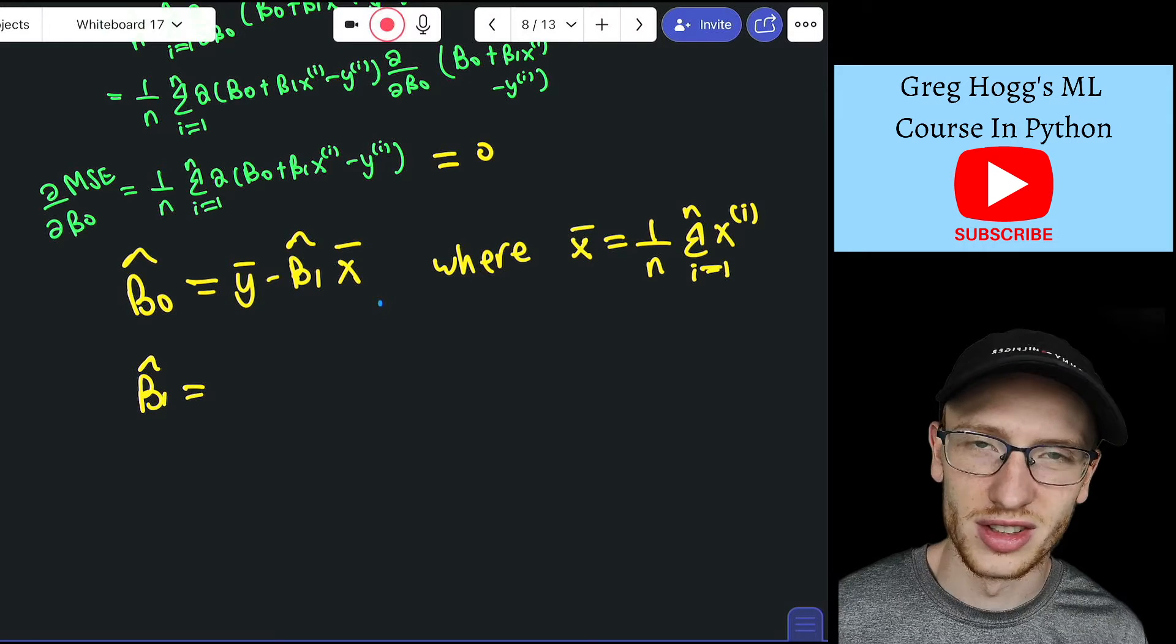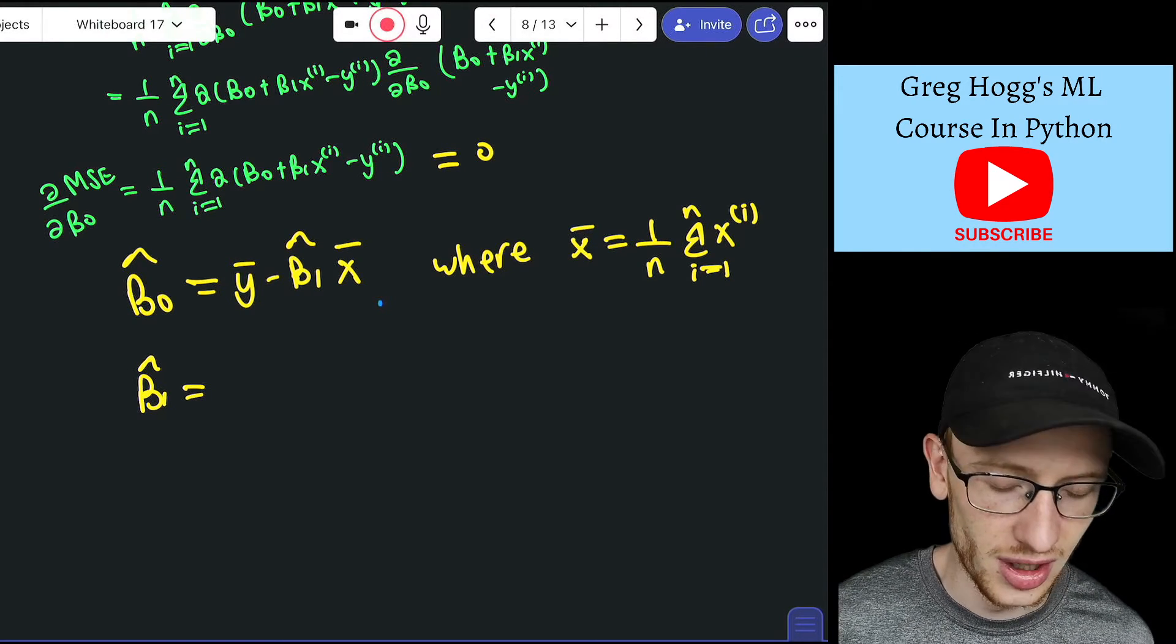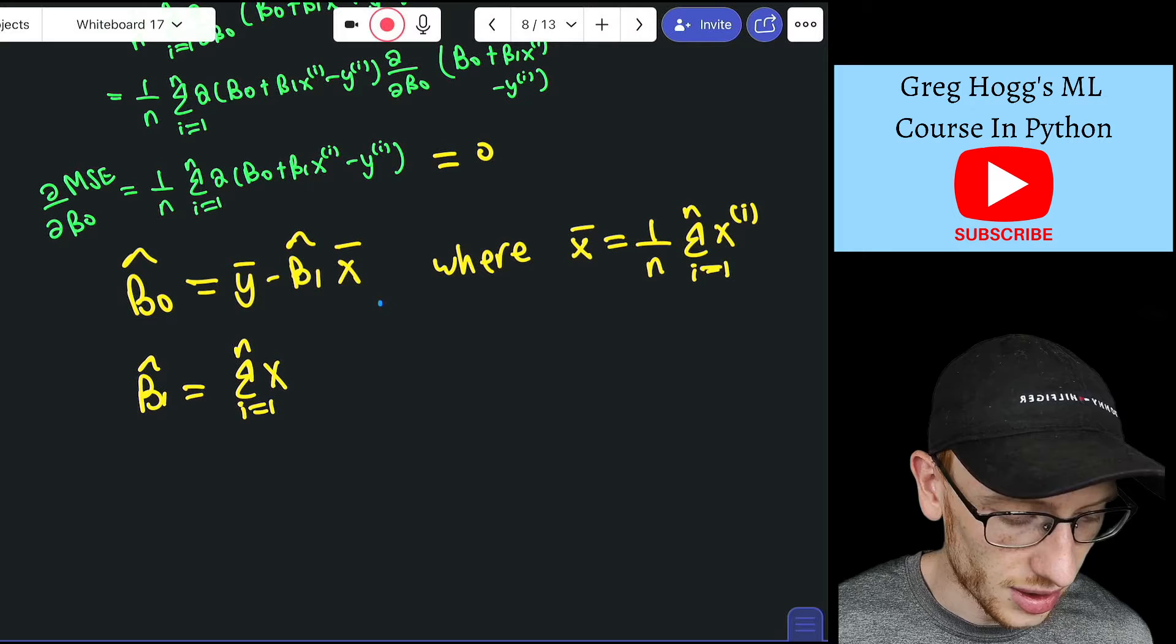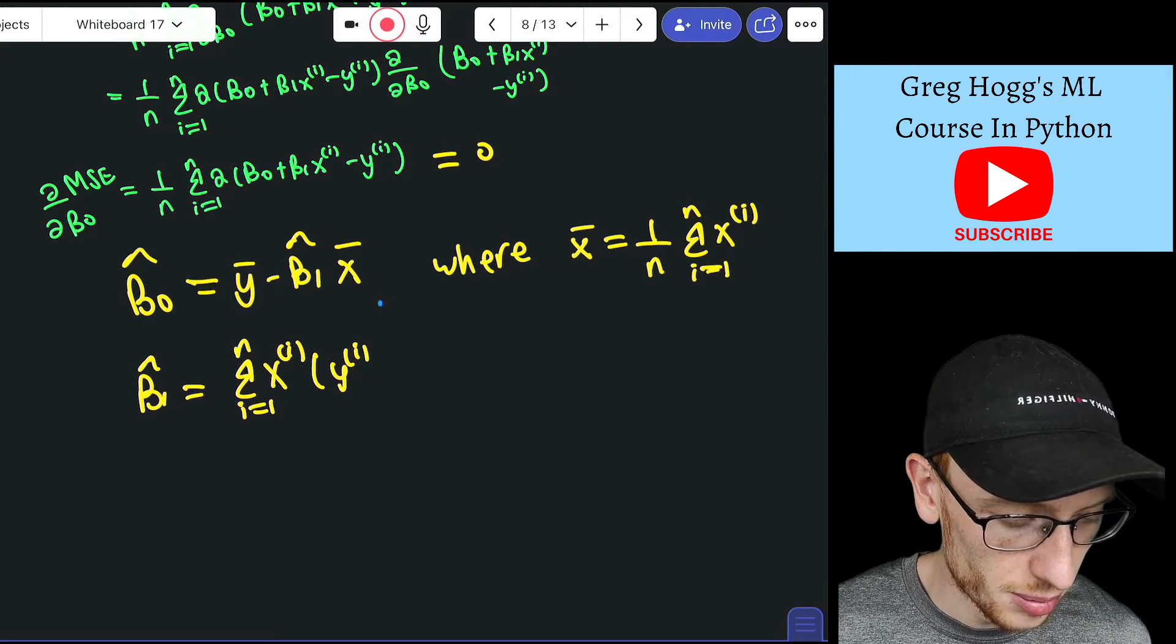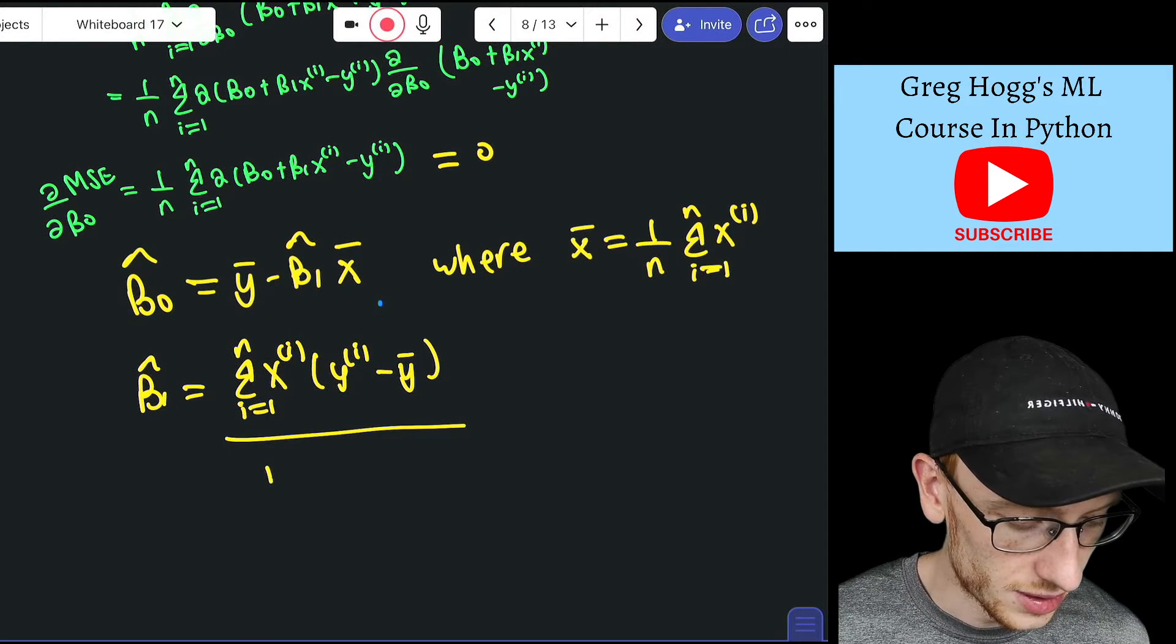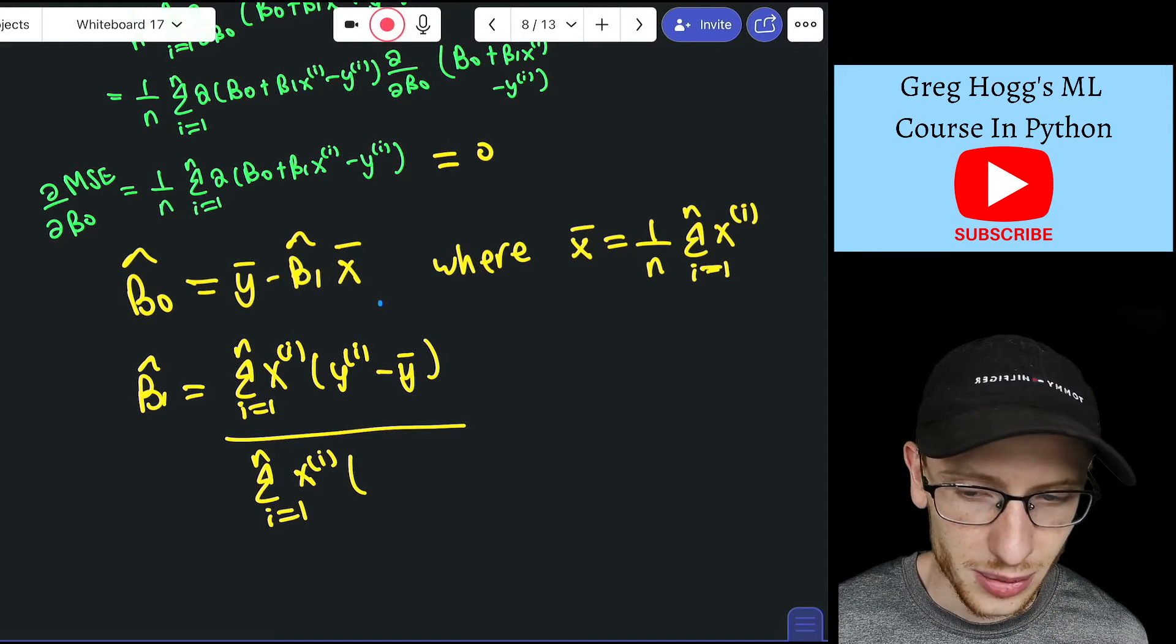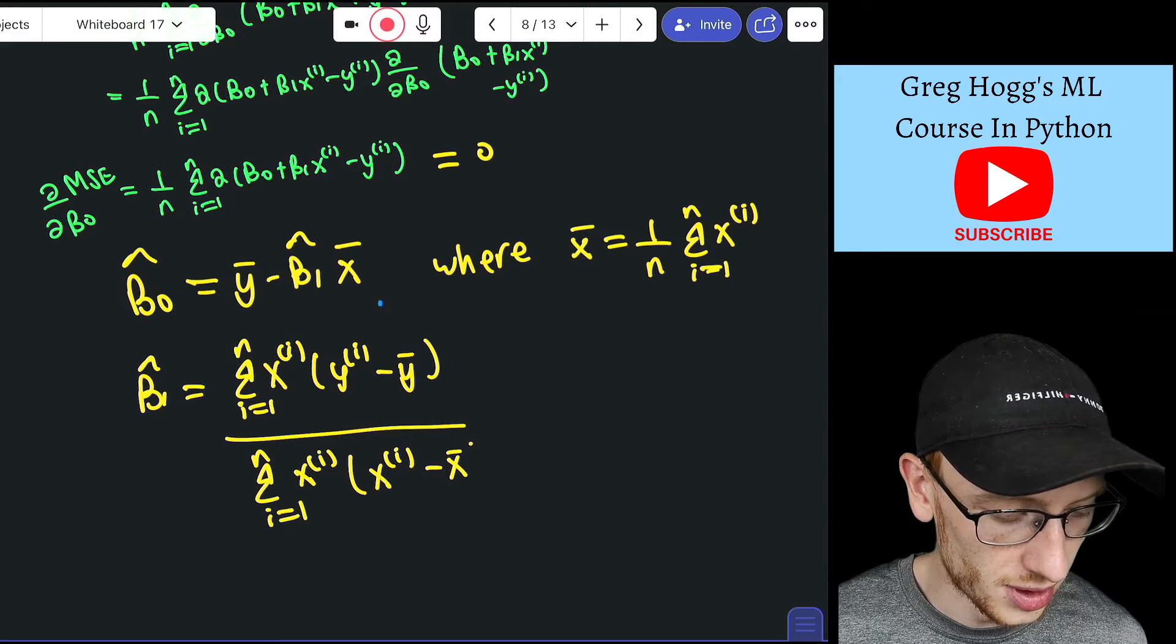And this is not going to have any beta0s in it because then it still wouldn't be an answer. Beta1 hat is just the sum as i goes from 1 to n of xi times yi minus y bar, divided by the sum as i goes from 1 to n of xi times xi minus x bar.